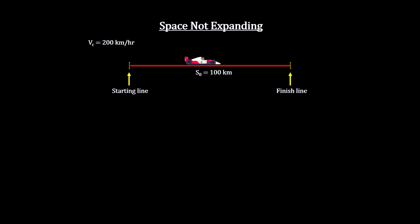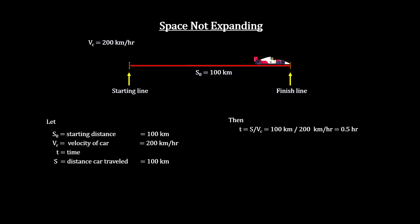If we set its odometer to zero when it leaves the starting line, it will read 100 kilometers when it reaches the finish line in half an hour.